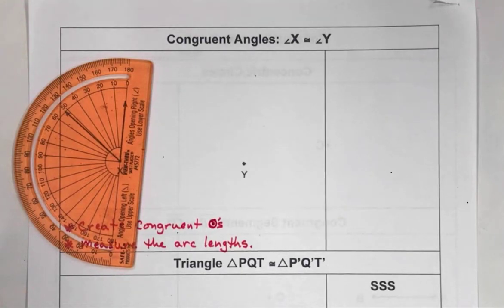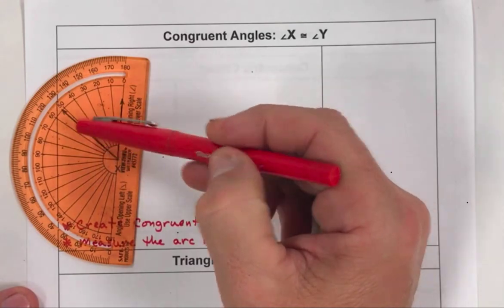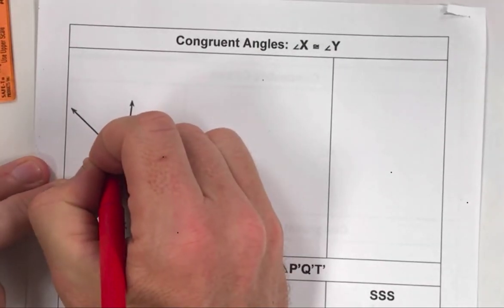All right, the goal of this video is to show you how to create congruent angles. I want to first start you out by recognizing that this angle is about 52 degrees. Our goal now is to create another angle that's also 52 degrees.